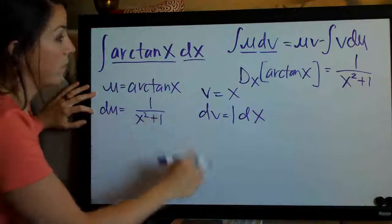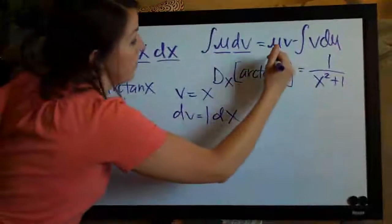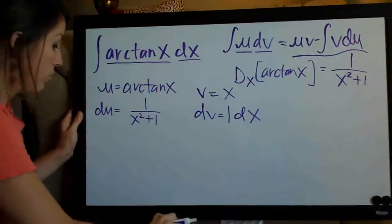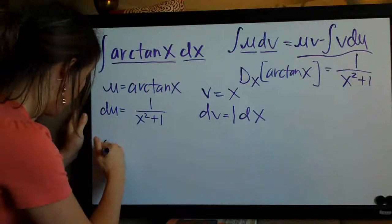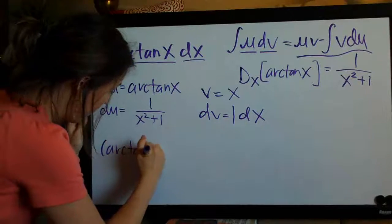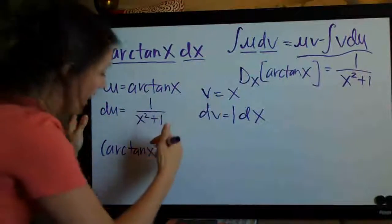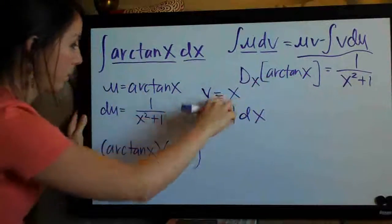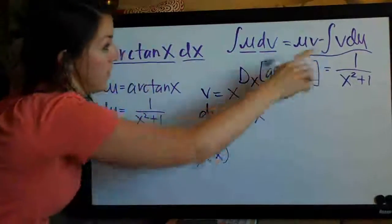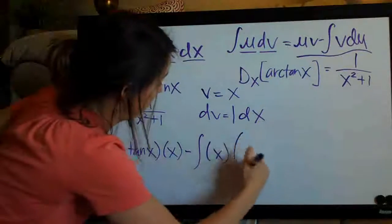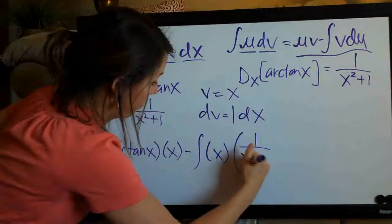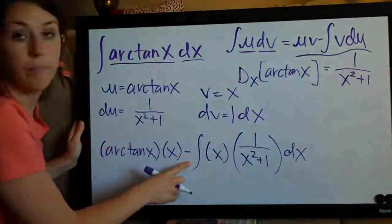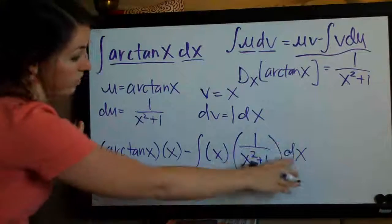So now that we have all four of these components, we go ahead and plug them back in to the right hand side of this equation, starting with u. So u in this case is arctan of x. v is x, so we multiply by x. And then we have minus the integral of v, so x, times du, which in this case is 1 over x squared plus 1. And then we always have to just add dx here because dx goes with this integral notation.